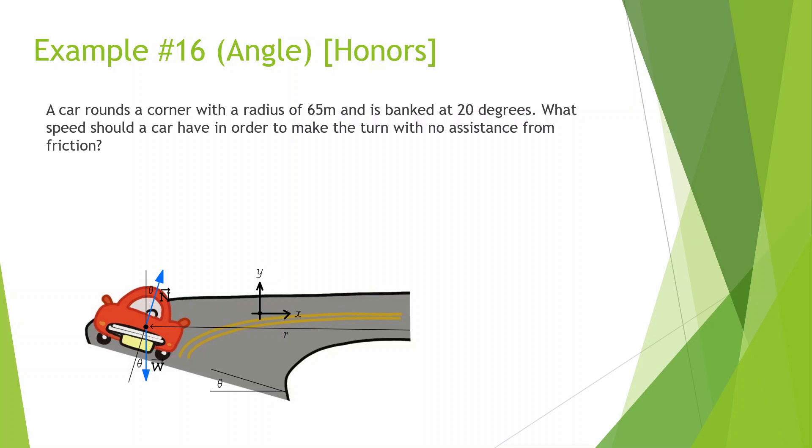A car rounds a corner, a radius of 65 meters, and is banked at 20 degrees. What speed should a car have in order to make a turn with no assistance of friction? So very similar question, but it's slightly more difficult. What you're going to notice is there's no mass for this problem, but let's see if we can figure this out. We know the normal force in the y direction is equal to mass times gravity, it's the same as force of gravity. And we also know force normal in x is equal to the force centripetal, that's what allows it to go in a circle.